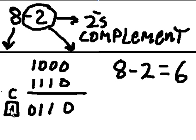1 and 1 is 0, carry 1. Now, this last carry, you automatically discard like that.